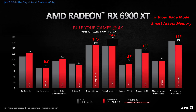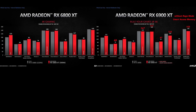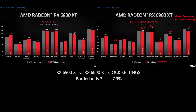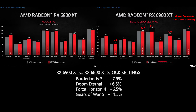Even at stock settings it's still very comparable to the RTX 3090 — it loses on a couple of titles but only by very slim margins, and across titles you're within about 3–5%. Comparing to the RX 6800 XT with both charts now without Rage Mode and SAM: Borderlands 3 is +7.9%, Doom Eternal +6.5%, Forza 4 +6.5%, Gears 5 +11.5%, RE3 +5.1%, and Wolfenstein Youngblood +7.7% — roughly 7–8% overall.